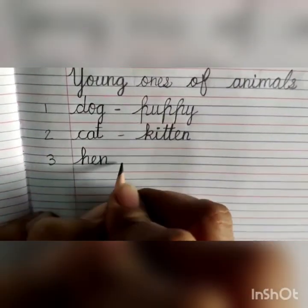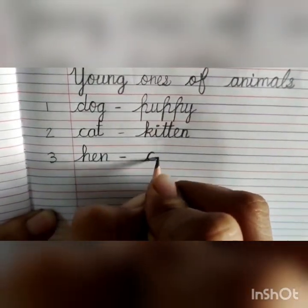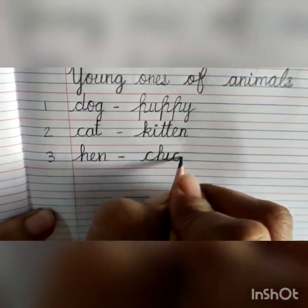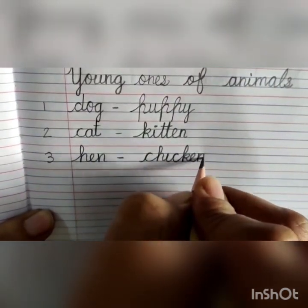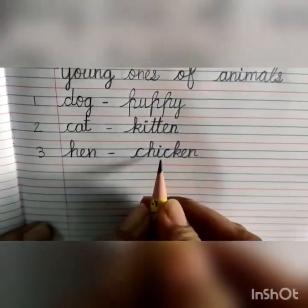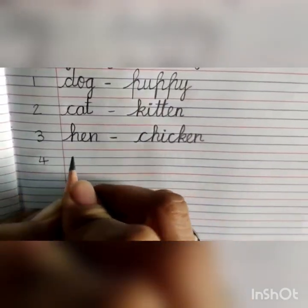H-E-N. Hen. Dash. C-H-I-C-K-E-N. Chicken. Hen – Chicken. Number 4.